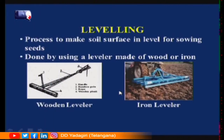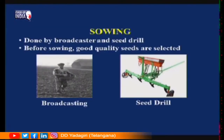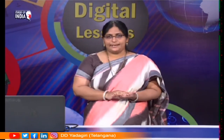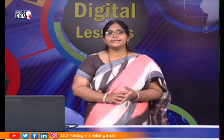After ploughing, the soil will have ups and downs. To make the soil surface level, a machine called a leveller is used. The leveller is made of either wood or iron. The next step is sowing, which means putting seeds into the soil. It is done either manually or by machines. Manually, it is done by two methods: broadcasting — throwing seeds across the soil — and line sowing, which places seeds in particular rows.